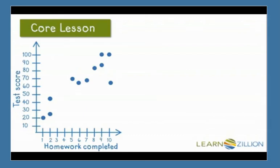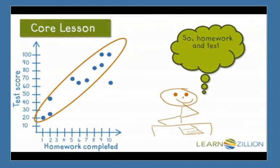The tighter these clusters are, the stronger the relationship is between the two pieces of data that have been collected. Looking at this graph, the points are pretty close together, so I can conclude that there is a strong relationship between homework and test scores.